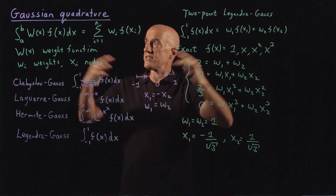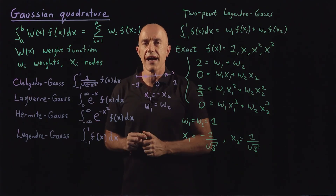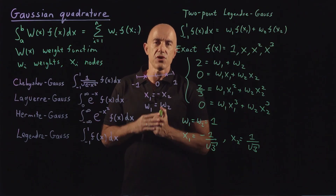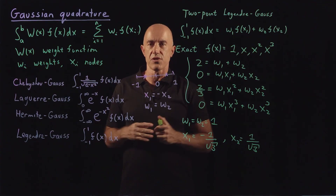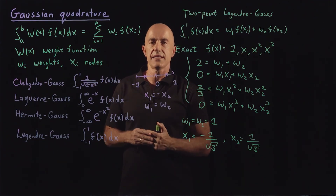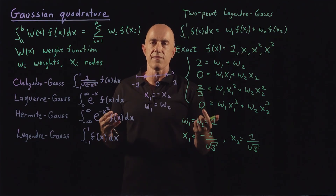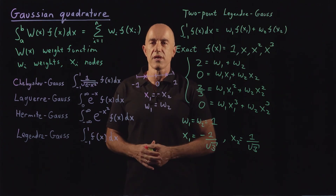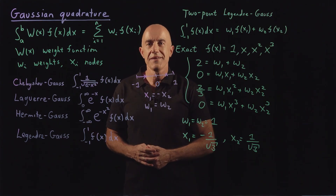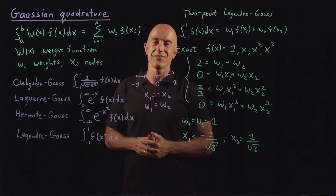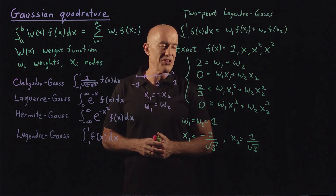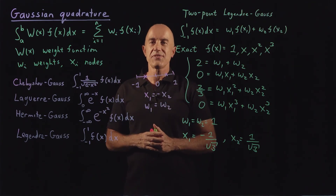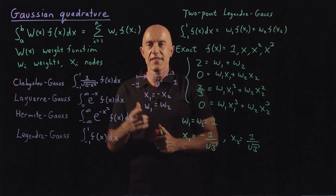This is just to give you a flavor of Gaussian quadrature. In practice, you'll use MATLAB's integral.m, which has a type of Gaussian quadrature built in. You don't really need to know what it's doing, but it does it very well — so you're lucky you don't have to code these things. I'm Jeff Chasnov. Thanks for watching, and I'll see you in the next video.